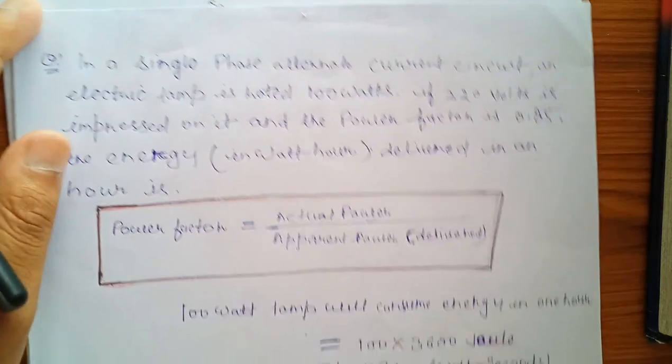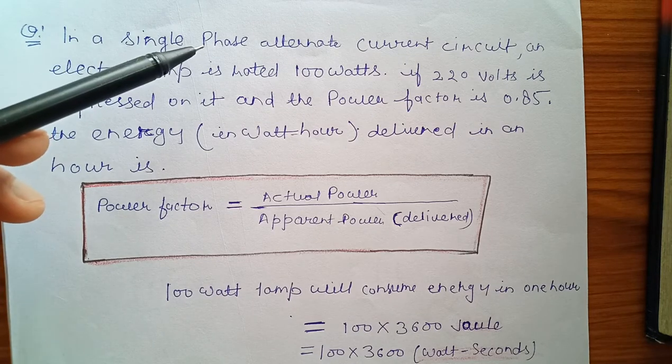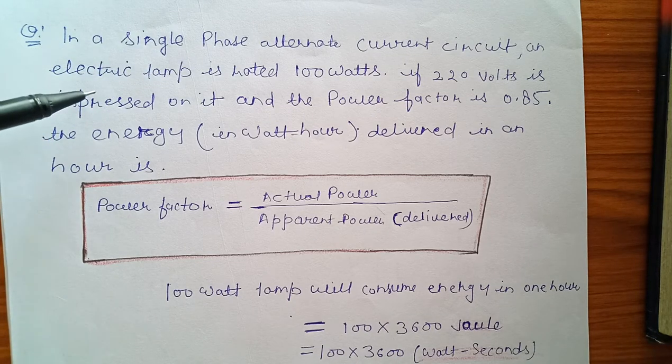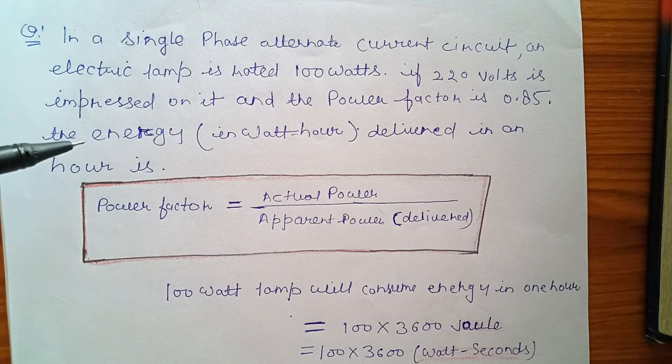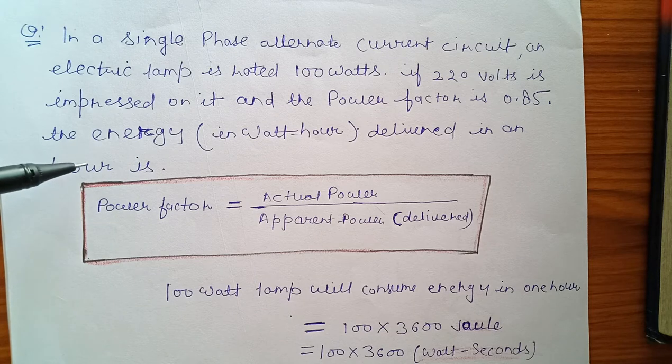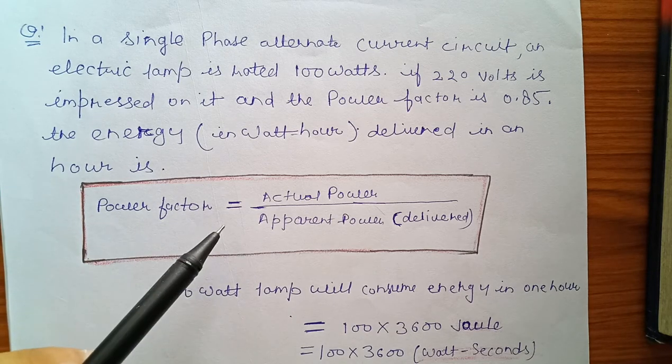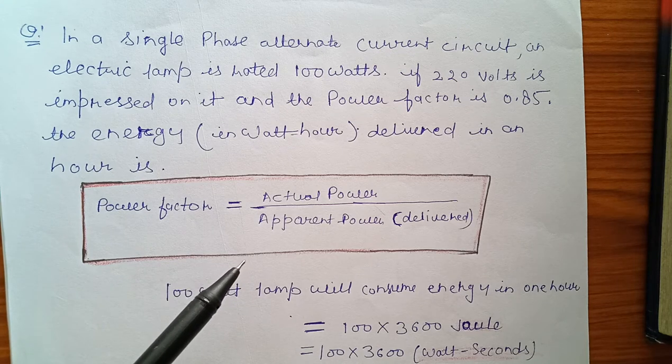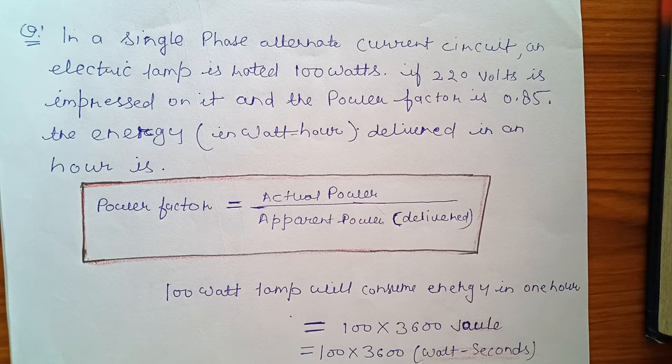The next question was power factor. In a single-phase alternating current circuit, an electric lamp is rated 100 watts. If 220 volts is impressed on it and the power factor is 0.85, the energy delivered in an hour is what we need to find. The formula is: power factor equals actual power by apparent power.